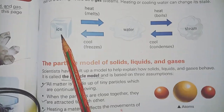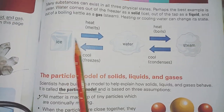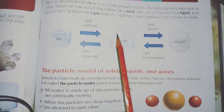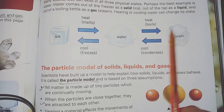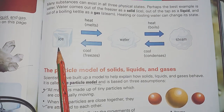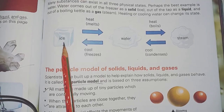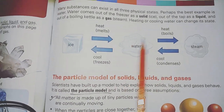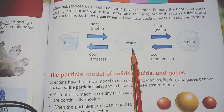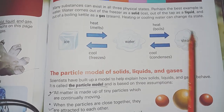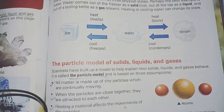Many substances can exist in all three physical states. For example, water — you can convert water into all three states. We can convert it into ice (solid), keep it as liquid, or convert it into gas in the form of steam. When we cool it, it becomes solid; when we melt it, it becomes liquid; and when we boil it, it converts into steam.